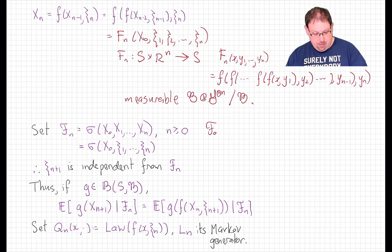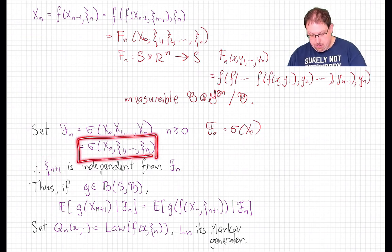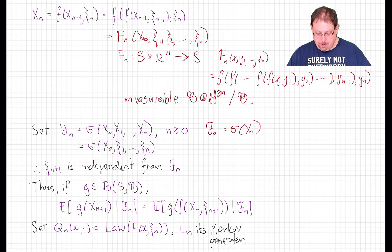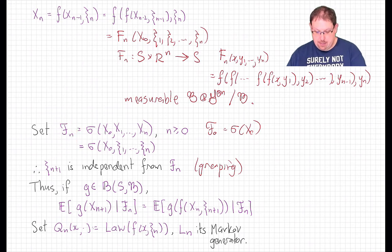That's the easy direction of the Doob-Dynkin representation theorem. And just for a little bit of notation, I'll ease here. Let's note that F_0 is going to denote the sigma field just generated by X0. Now here is a key observation. ξ_{n+1} is independent from this whole sigma field here that we called F_n. That's because ξ_{n+1} is independent from all of these. These were an iid sequence. And we assume that the starting point was independent of the whole sequence as well. And so by the grouping lemma, we get that ξ_{n+1} is independent from F_n.